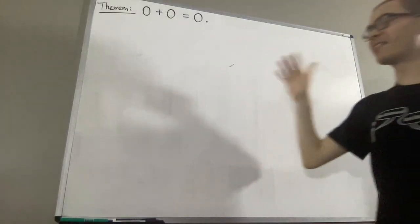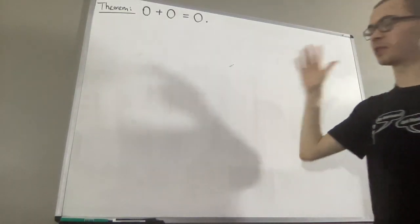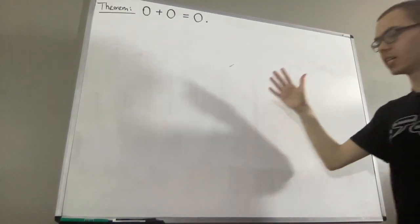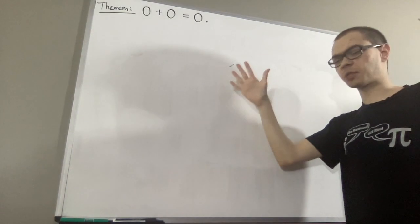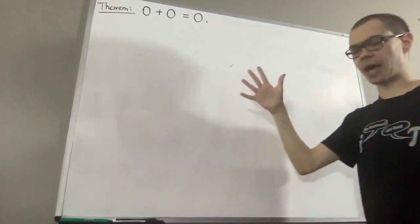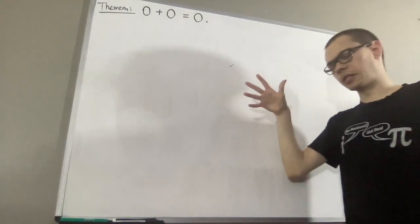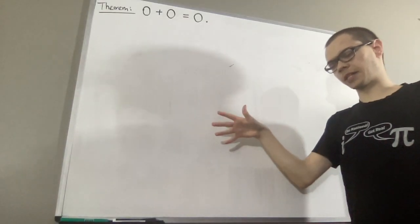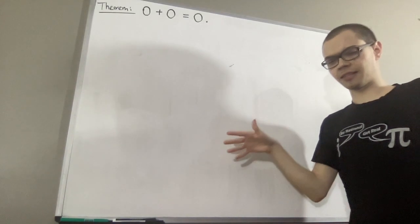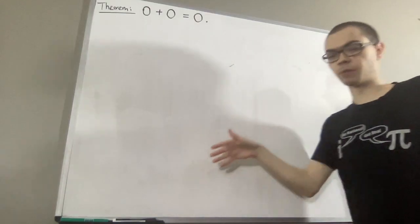In this series, we are looking at a list of axioms for the complex numbers, and these axioms come from Metamath. I'll leave a list of axioms and a link to Metamath in the description below.